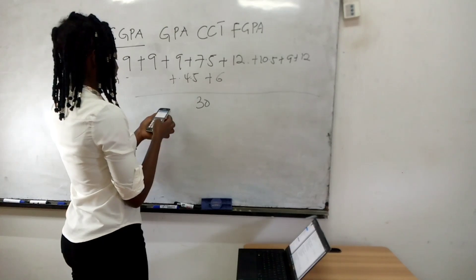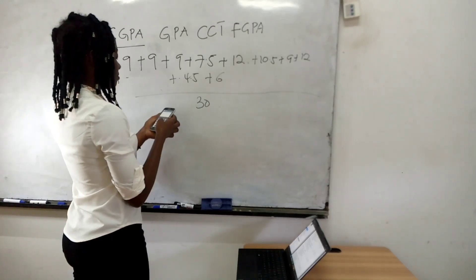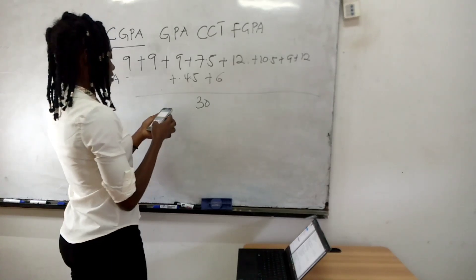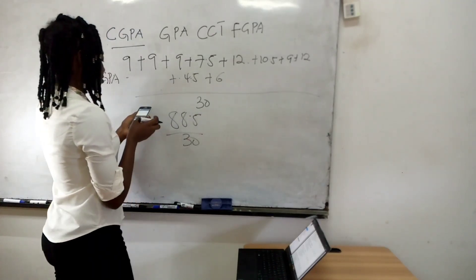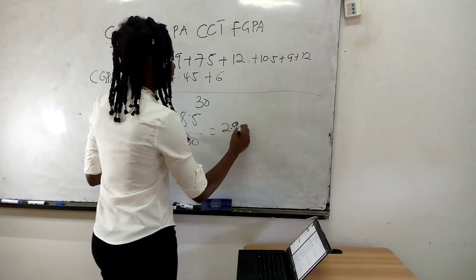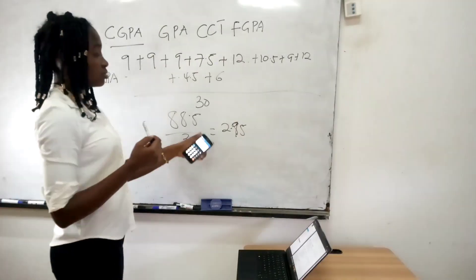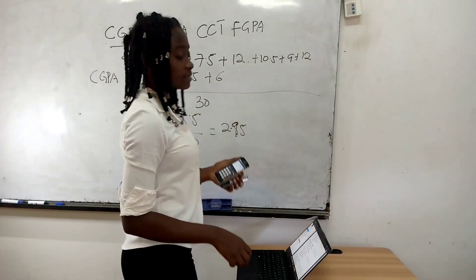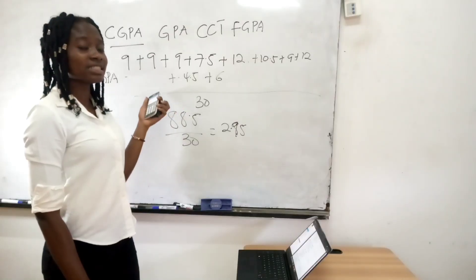So you put all these together: 9 plus 9 plus 9 plus 7.5 plus 12 plus 10.5 plus 9 plus 12 plus 4.5 plus 6. That gives you 88.5, divided by the CCT of 30, and you get 2.95. So realize that at the end of level 100, combining first and second semester, you've gotten 2.95 — which is exactly what is in the academic record. So this is how we calculate our cumulative grade point average, the CGPA, which is always shown in the academic record.